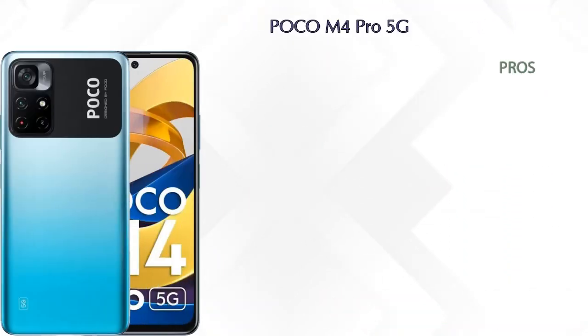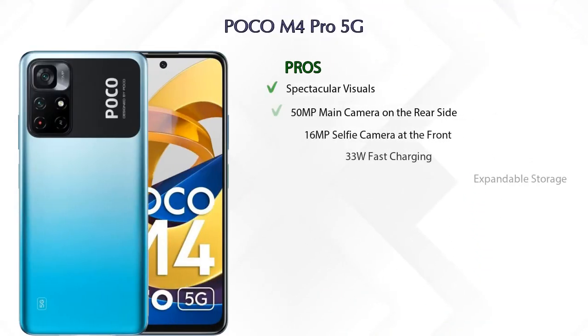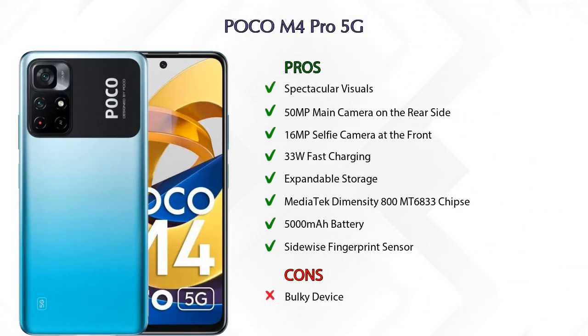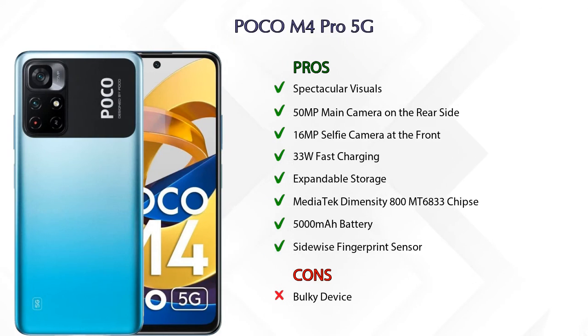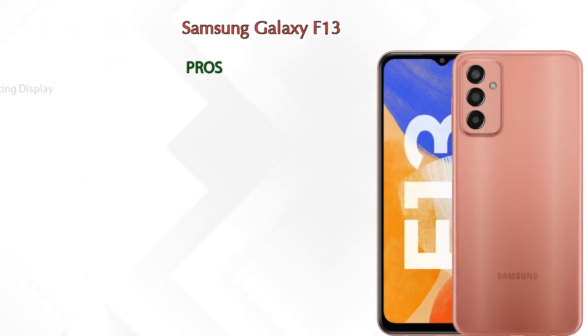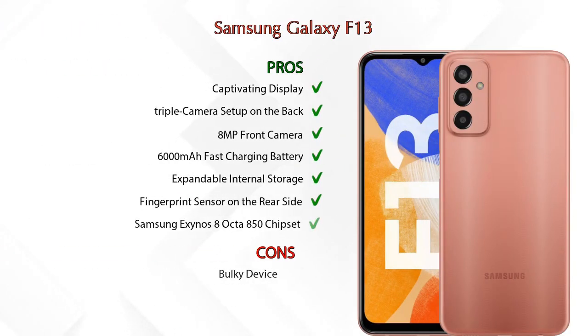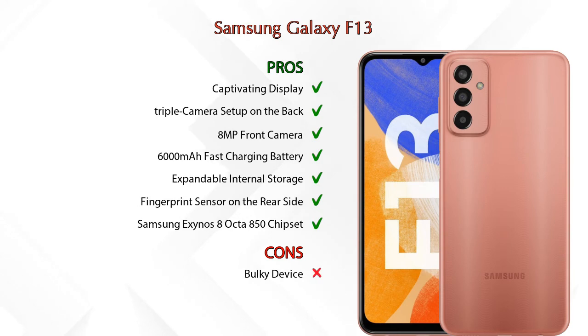Now let's talk about pros and cons. The Poco M4 Pro 5G has eight pros and one con, while the Samsung Galaxy F13 has seven pros and one con.